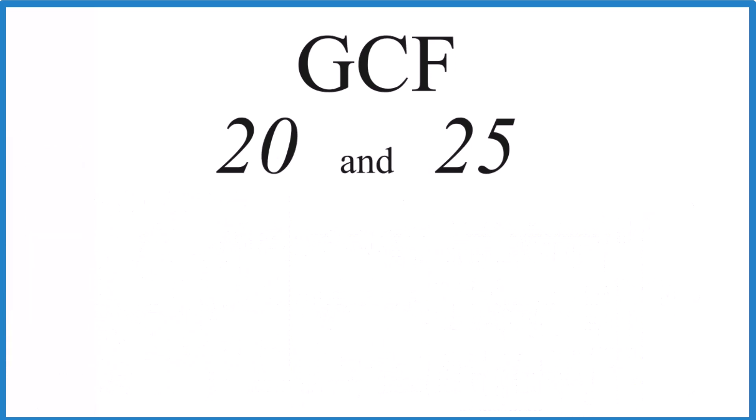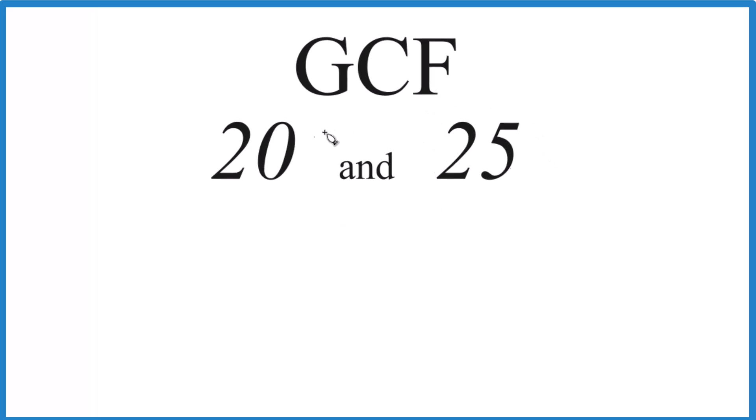So what we need to do is find a list of the factors for 20 and 25, then we can find the greatest common factor between these two numbers. For 20,